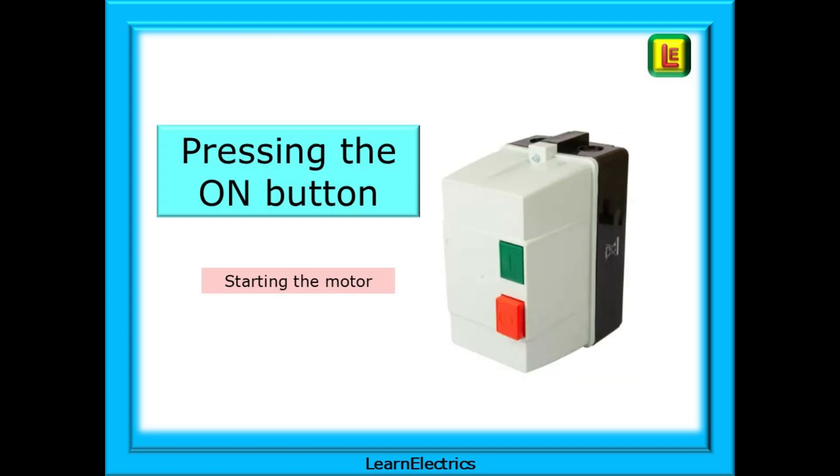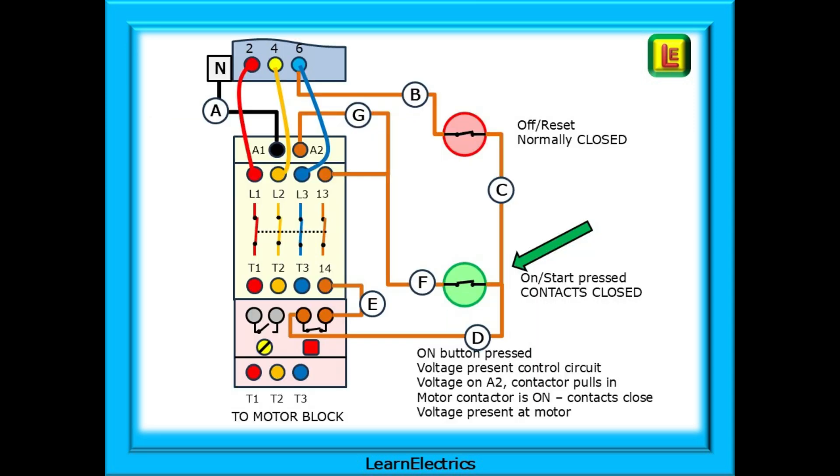Now we can press the on button and start the motor rotating. Pressing the green on or start switch will close the start switch contacts and allow 230 volts to pass onto wire F, up wire F to wire G and terminal A2 on the contactor.